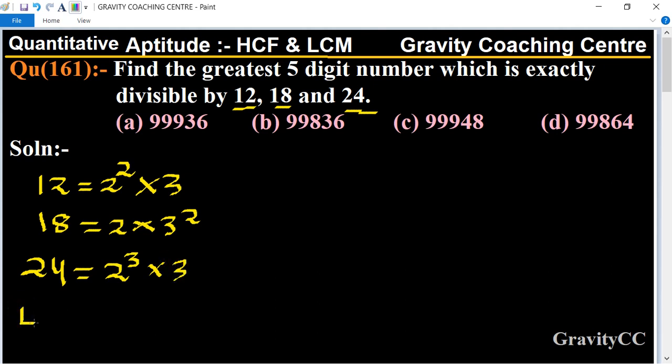So therefore their LCM equals the highest power of 2, which is 2³, and highest power of 3, which is 3². So it equals 72.